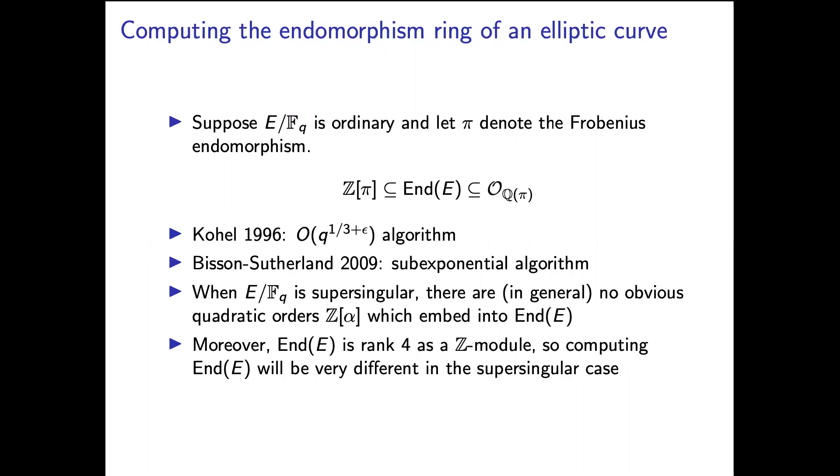When E is supersingular, then in general, for a general supersingular elliptic curve, there's no obvious quadratic imaginary orders which embed into End(E). So in other words, it's hard to find even one quadratic suborder of the full endomorphism ring. Moreover, we know that the endomorphism ring is rank 4, so finding one suborder isn't going to be enough. So altogether, this means that computing the endomorphism ring of E is going to be much different in the supersingular case. It is going to require a different approach.